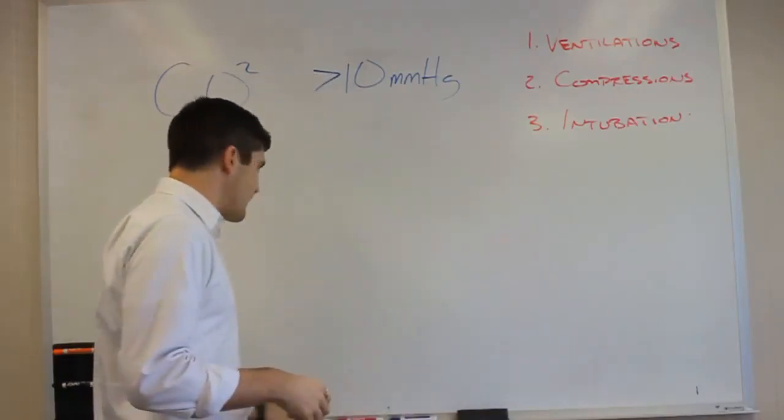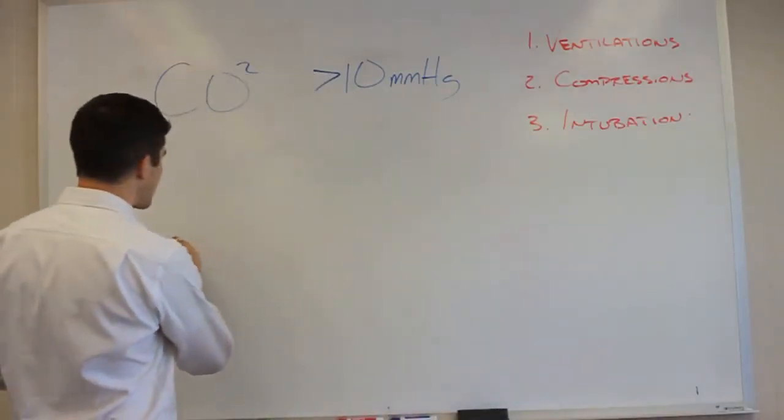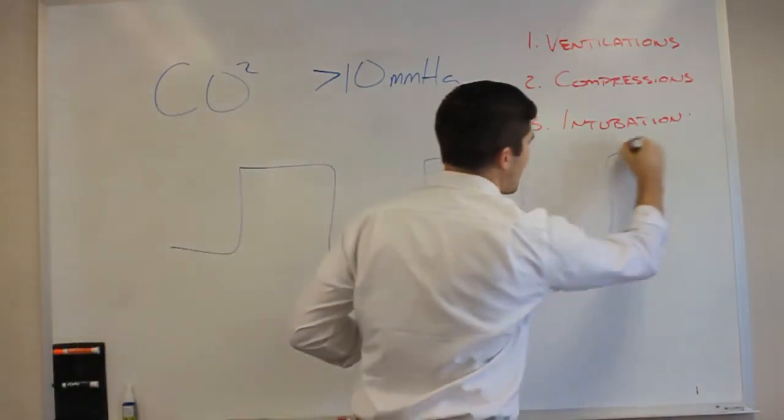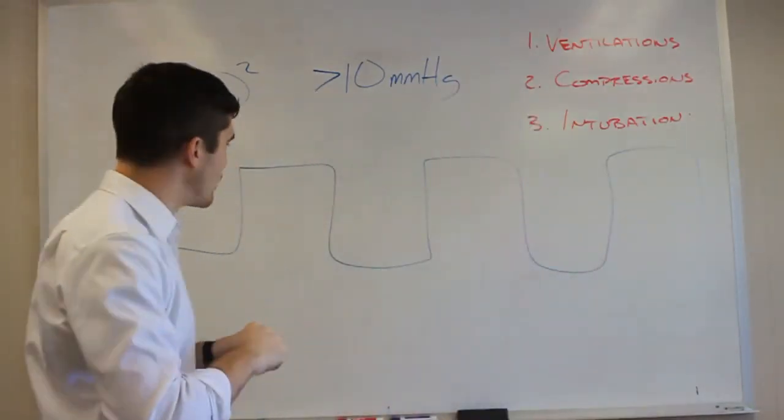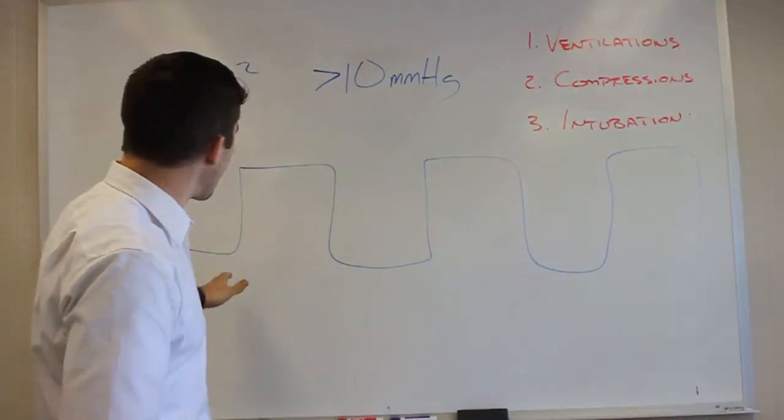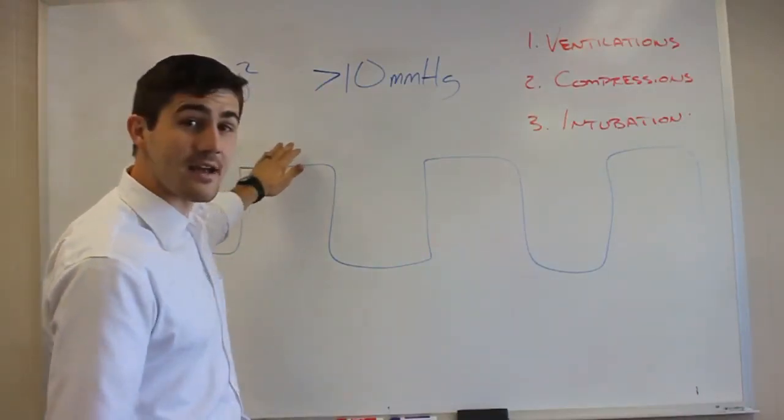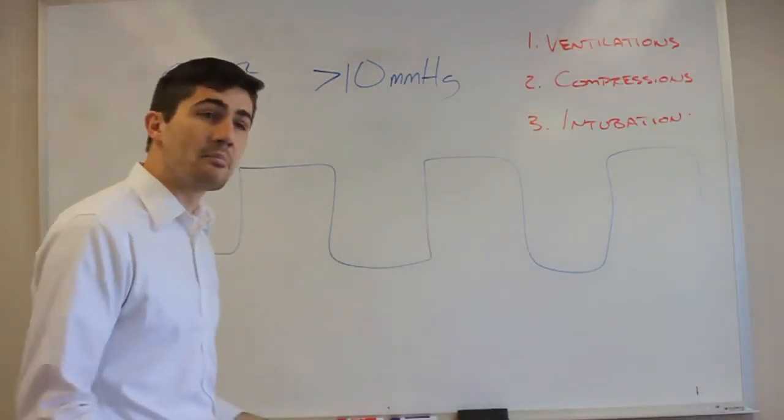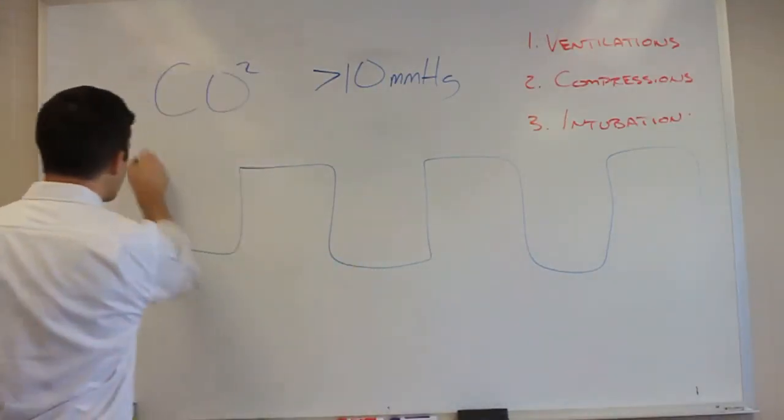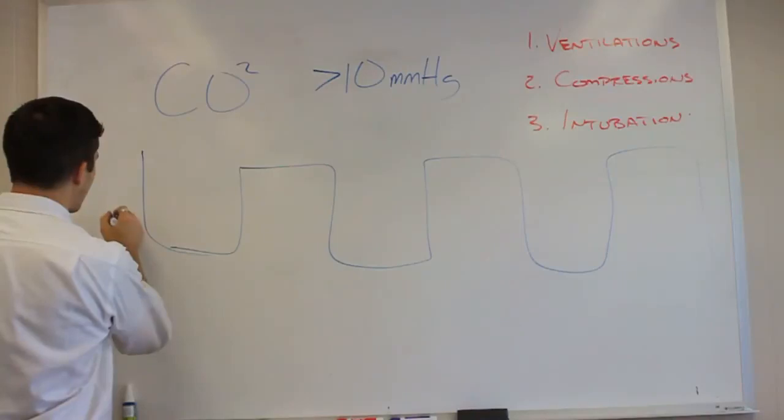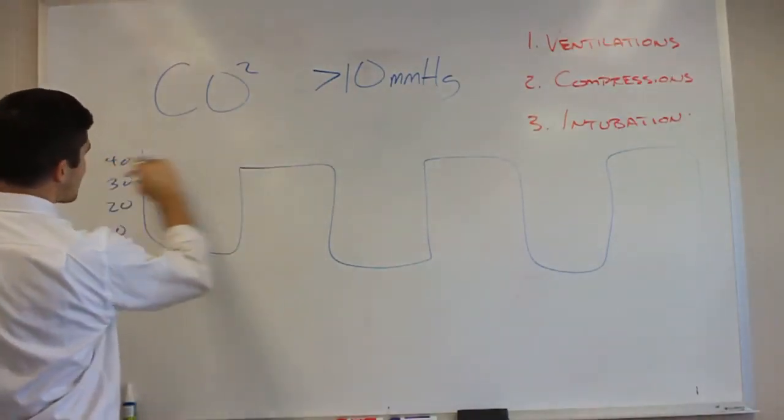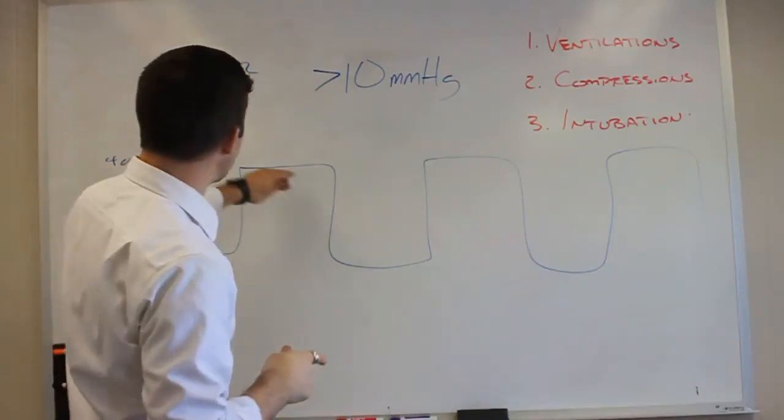So waveform capnography is going to show you some things on the monitor. It's going to do this boxy type reading. And when it goes up, that's the person exhaling the CO2. When it comes down, that's when the person is either breathing or being ventilated. And it's measured on a scale. So you'll have 10, 20, 30, 40, and you're able to see where that CO2 is lining up.